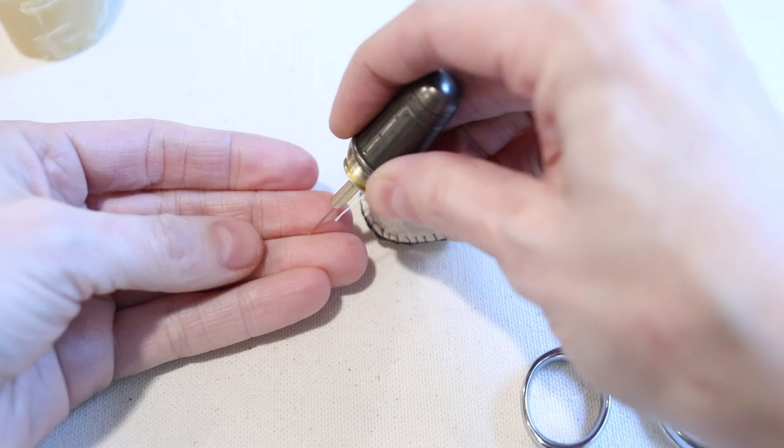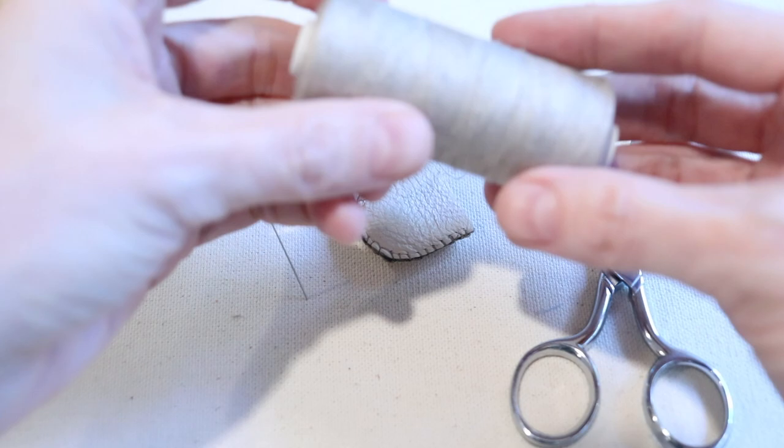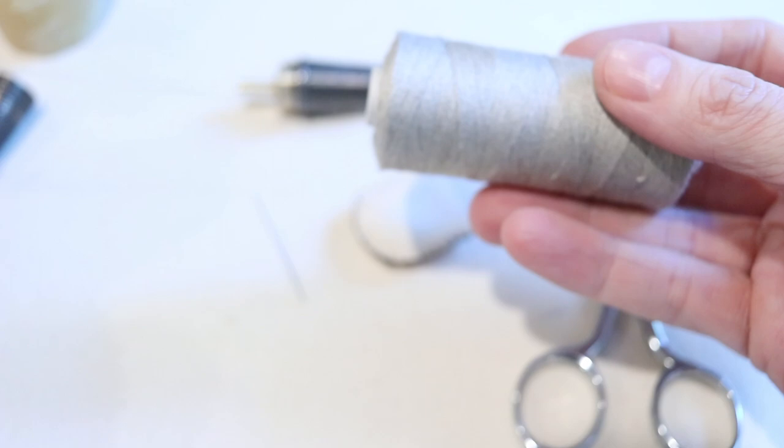You're going to need around 20 inches of thread to complete stitching all the way around your thimble. The larger your thimble, the more thread you're going to need. It's always better to err on the side of caution and use too much thread or have too much thread available than to not have enough.